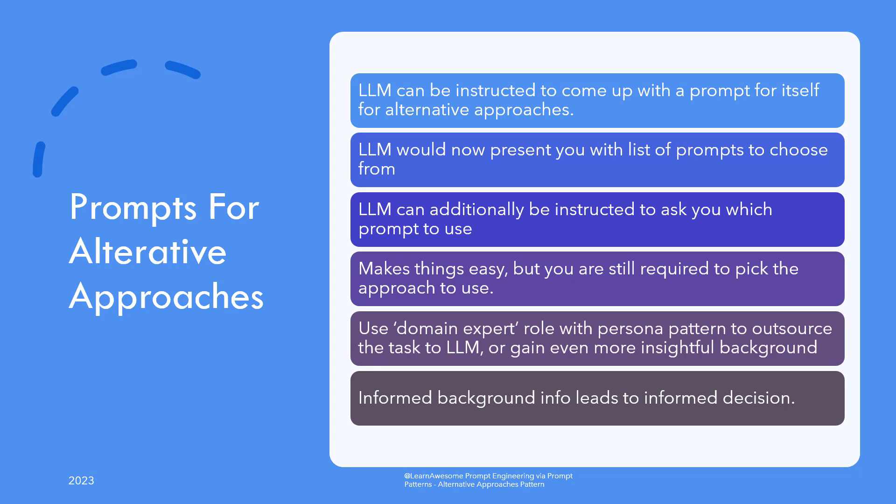Why not go one step further and add another instruction to ask you which prompt to use, so you won't have to do anything at all? But you still have to evaluate the alternatives yourself. If you really want to outsource that to the language model as well, you can prompt it to evaluate the alternative approaches as a domain expert. Using a domain expert is fine, but you are really trying to use the persona pattern here, so it's best to be explicit about which role or persona is doing the evaluation. That would give you an even better comparison and evaluation of the alternative approaches suggested initially.